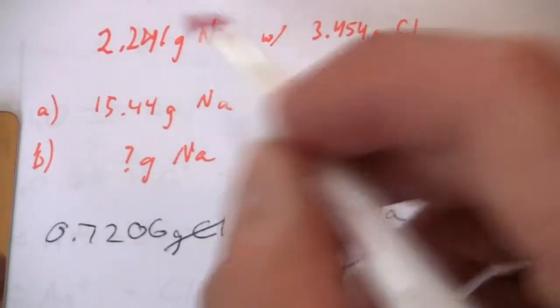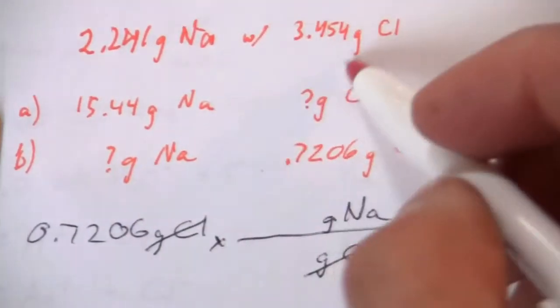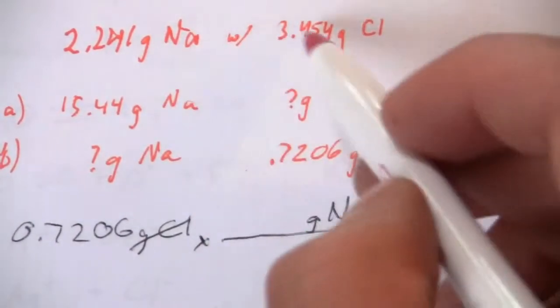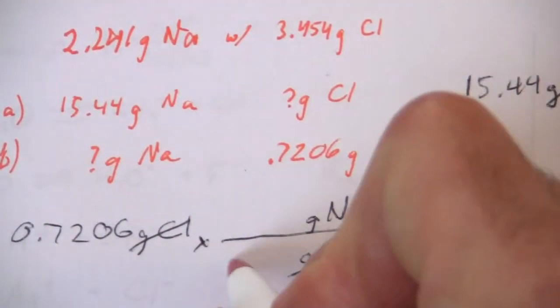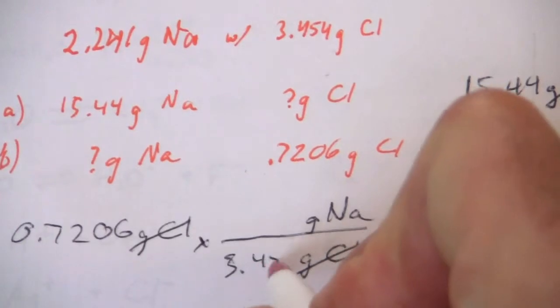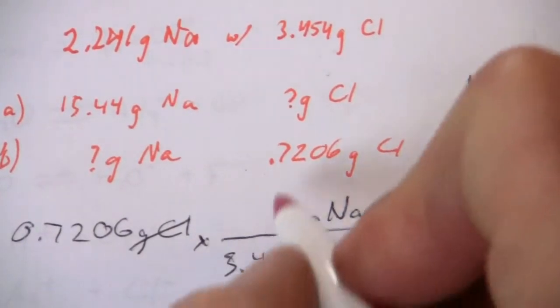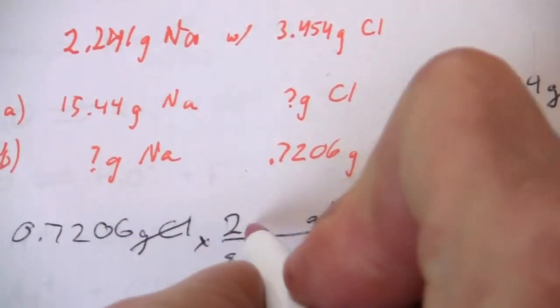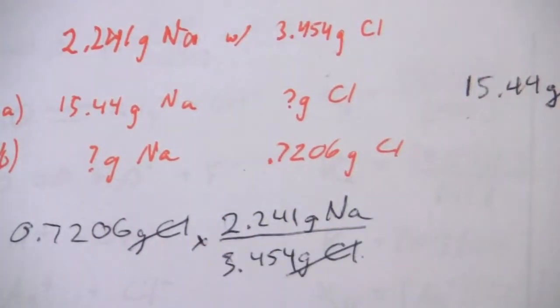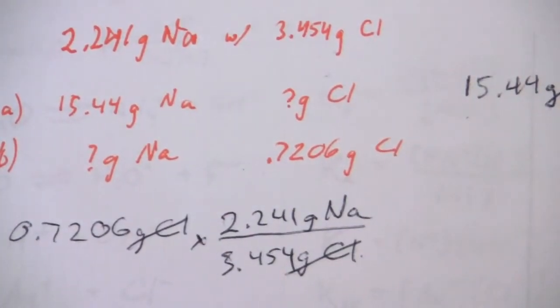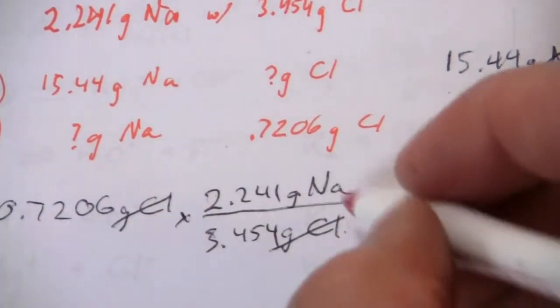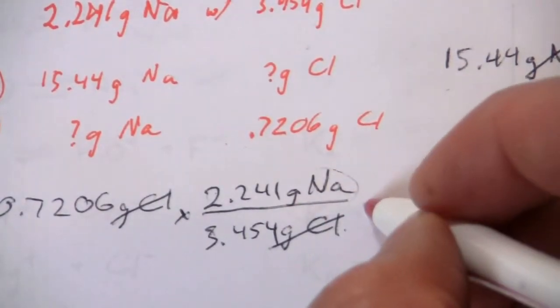And so this is our ratio. That's the proportion of sodium to chlorine that reacts in the compound, and we have 3.454 grams of chlorine that react with every 2.241 grams of sodium. Chlorine cancels and I'll have sodium in the end.